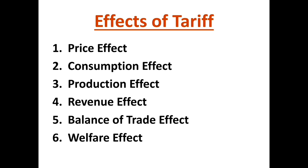When we talk about the welfare effect of tariff, we can identify three segments of the population: producers, consumers, and the government. For the consumer, welfare will obviously reduce because of the price effect — price will increase domestically, so it is against the interest of the consumer. For producers, it is beneficial in the sense that there is a production effect and domestic production increases. For the government, revenue will increase. So tariff is against the interest of consumers but favorable for producers as well as the government.